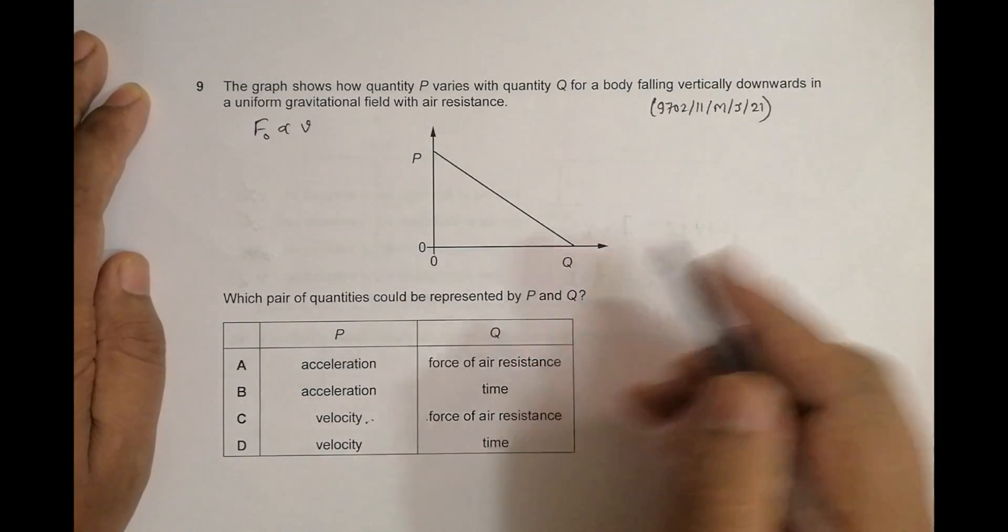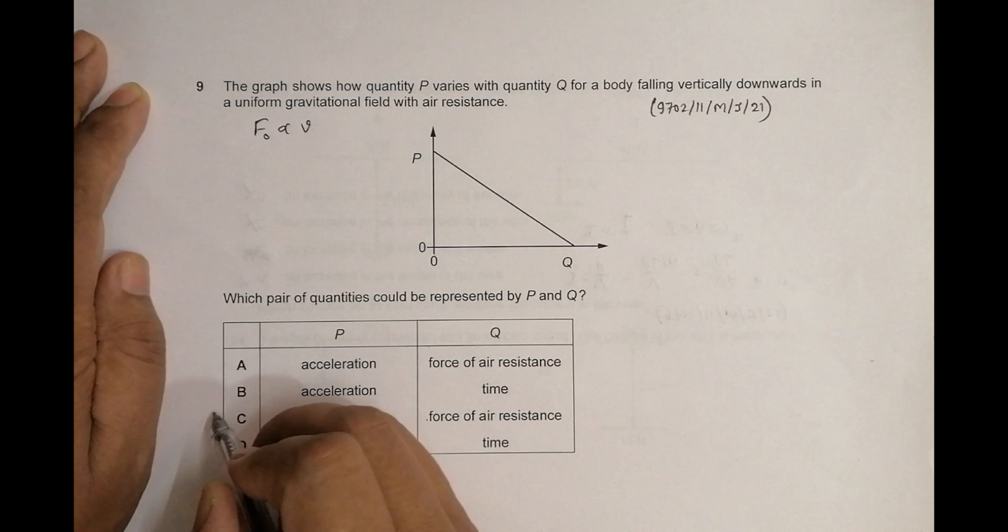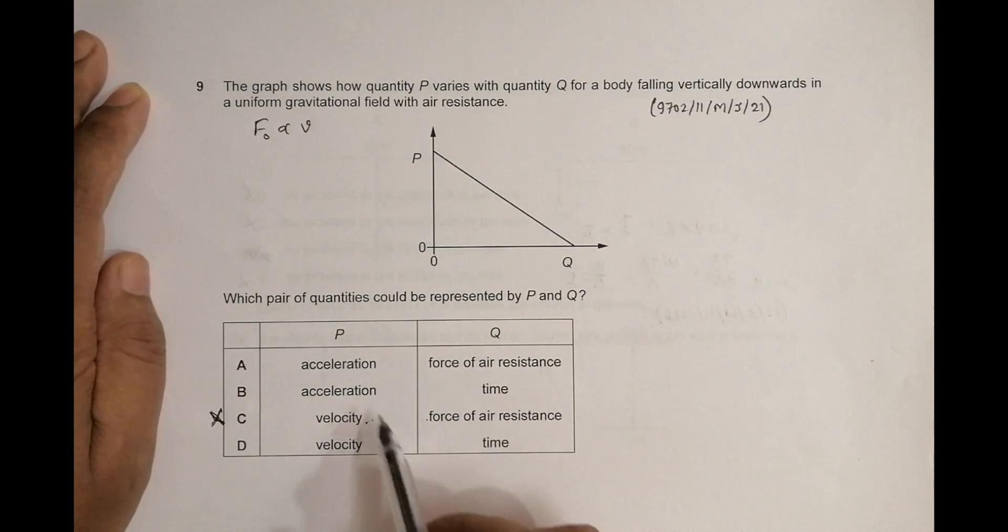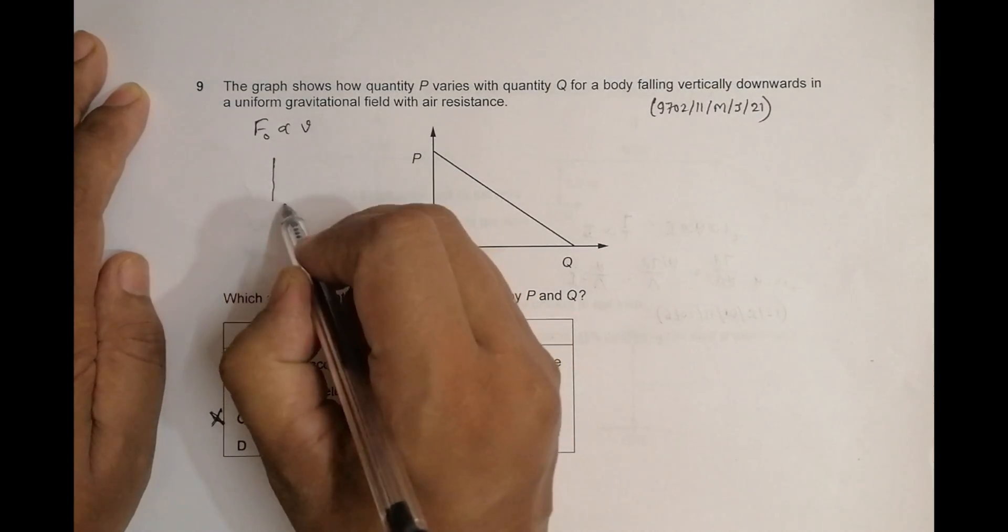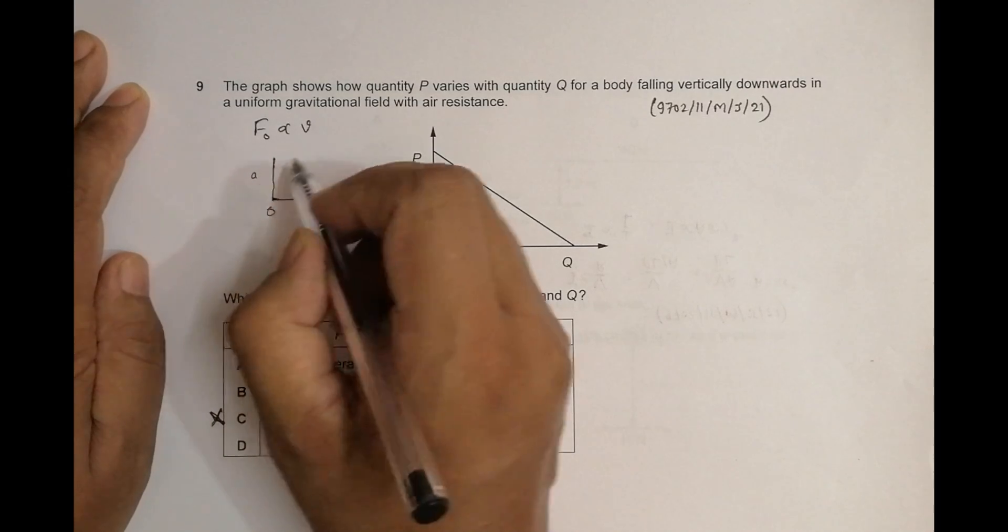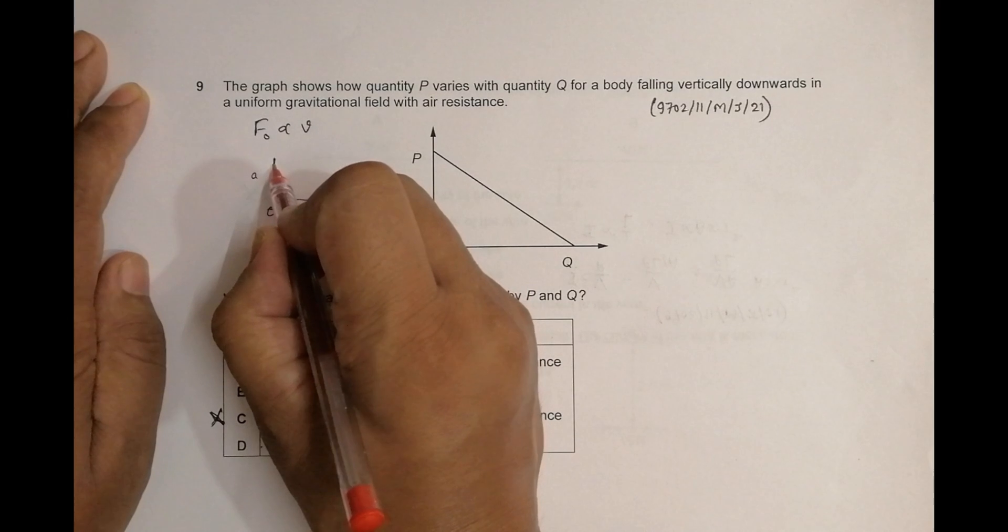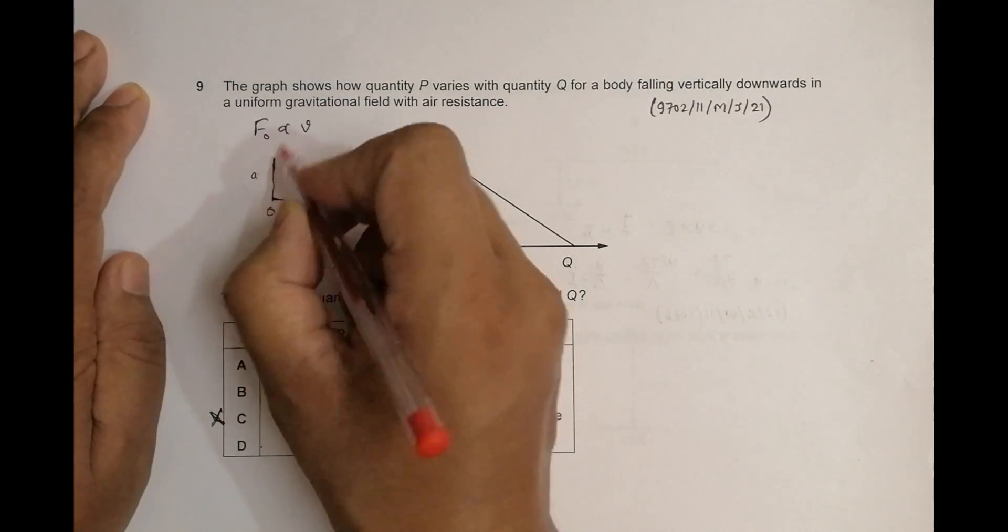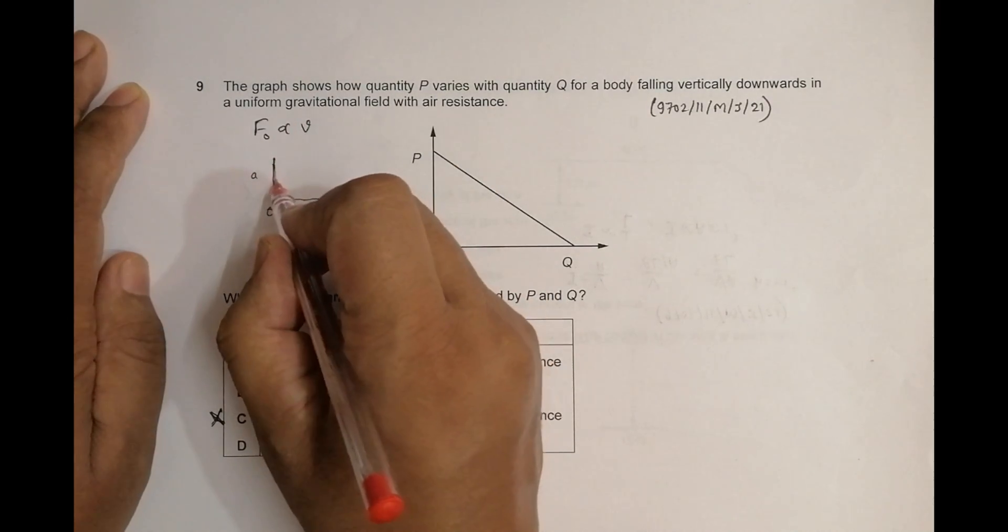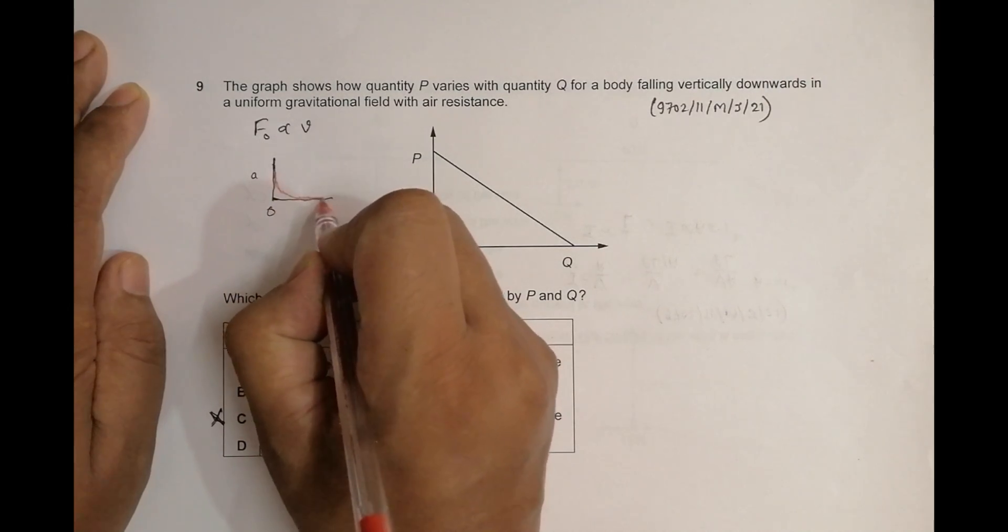The acceleration-time graph is well taught in classrooms. The graph should be like this: it starts from maximum, it decreases, and the rate of decrease becomes less and less until it becomes zero. So the a-t graph is also incorrect.